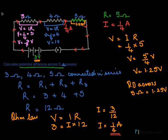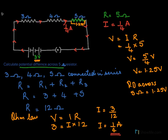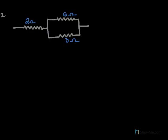In the second circuit diagram, we need to calculate the effective resistance. The current flows from the 2 ohm resistor and at one point splits into two branches — one flowing through 6 ohms and the other through 3 ohms. Since the same current is not flowing through both 6 ohms and 3 ohms, we can say they are not connected in series.